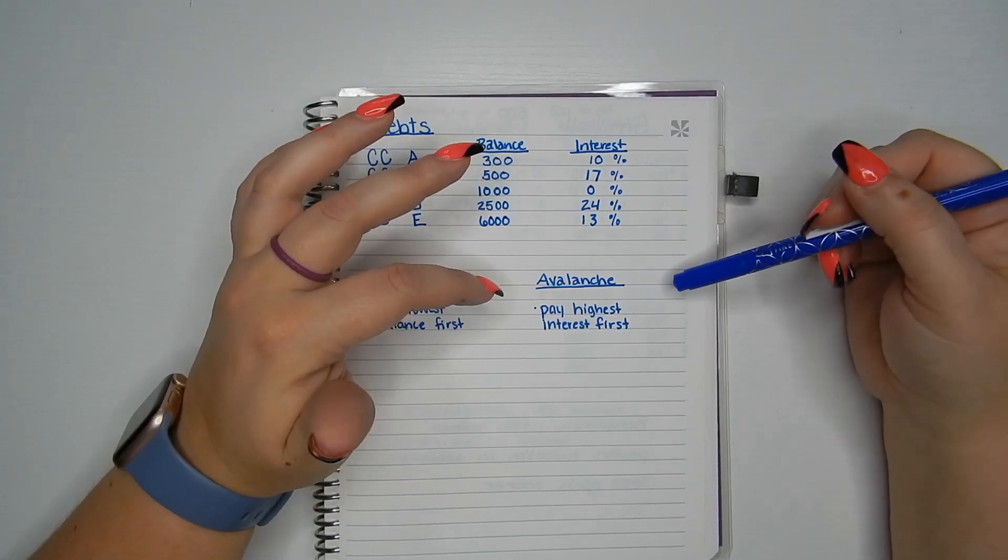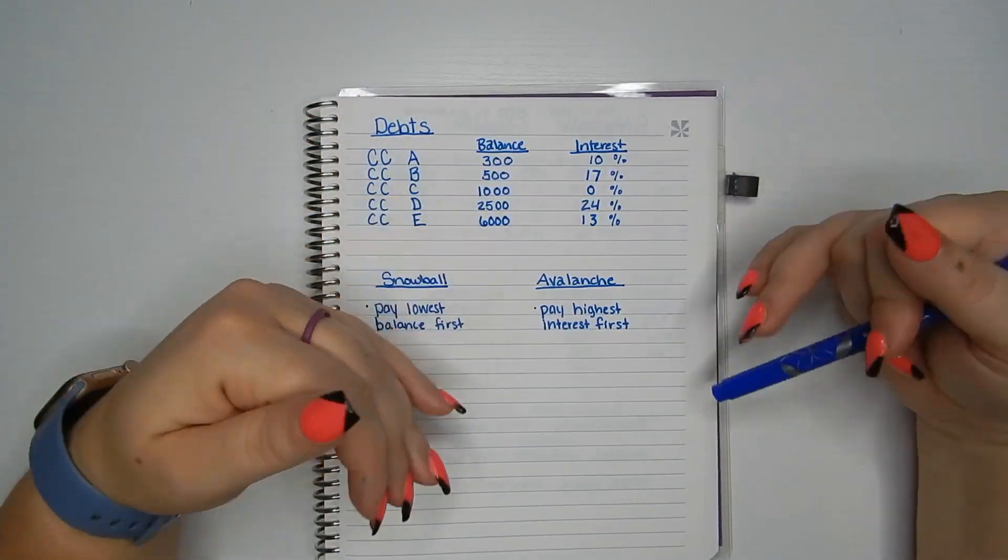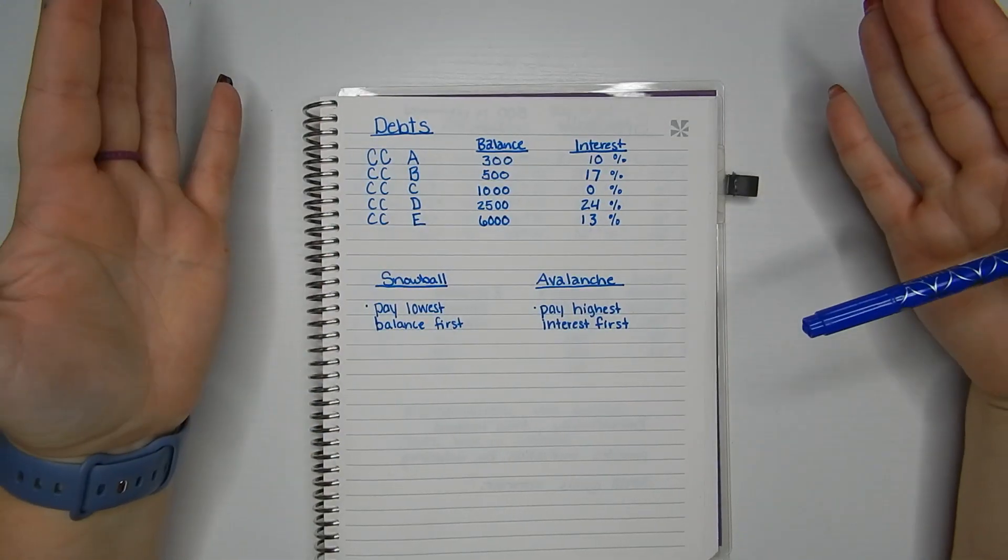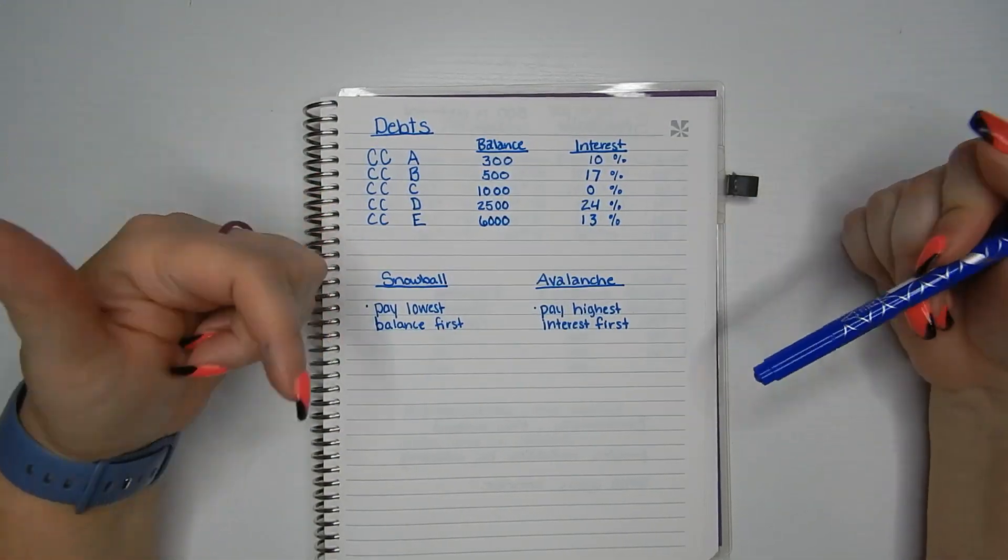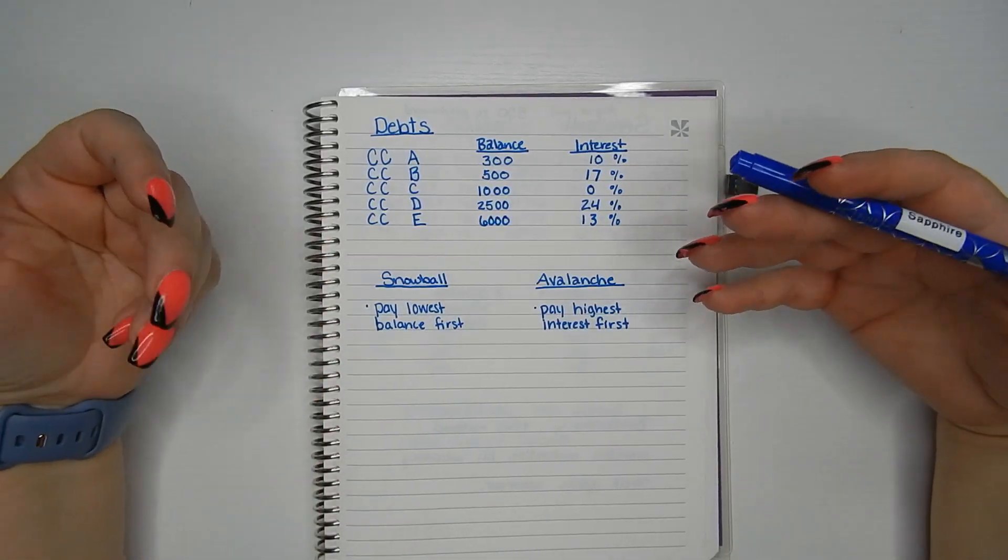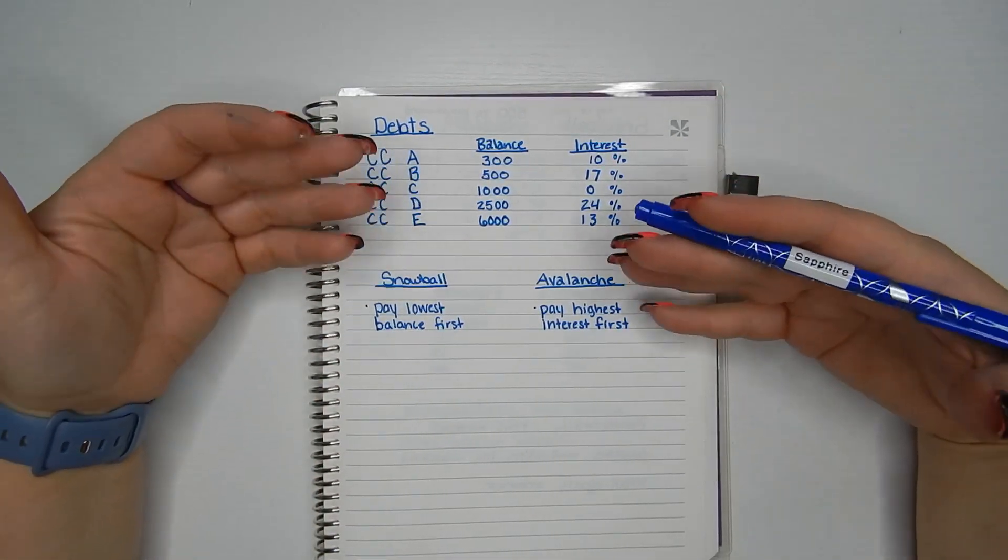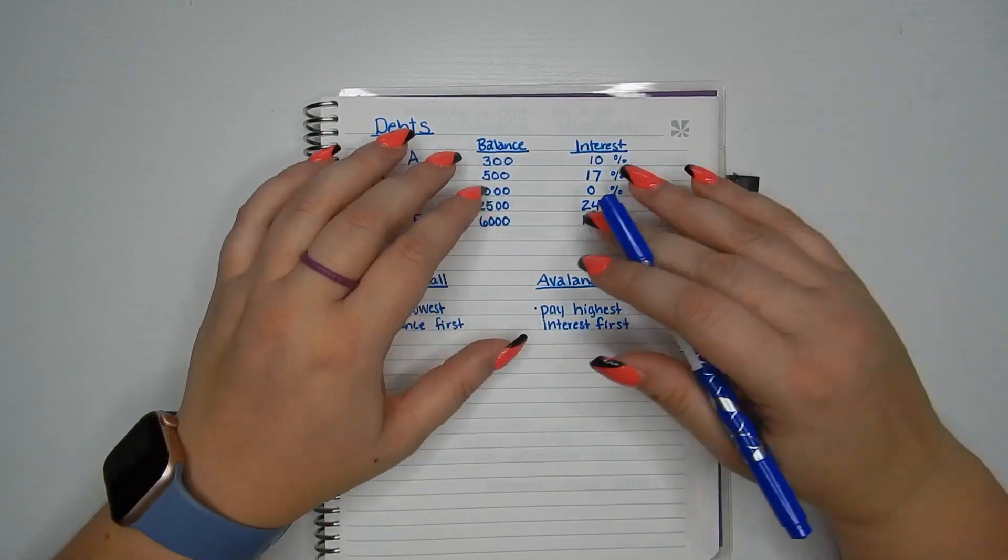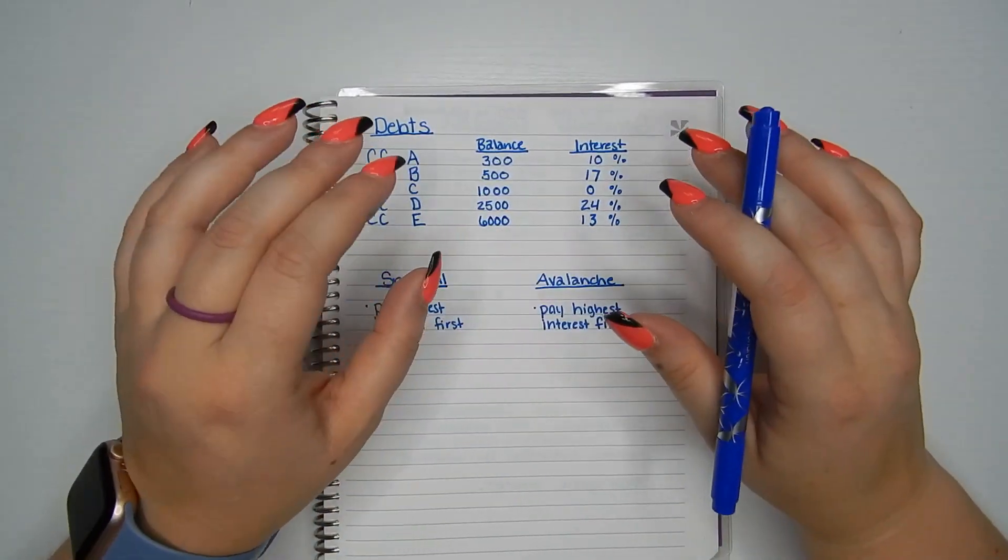Now the avalanche, if you think of an avalanche, you make the highest interest card your priority and pay that first. That way you're not paying as much in interest. So you're focusing on minimizing the amount of interest paid as opposed to paying off a card first.